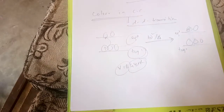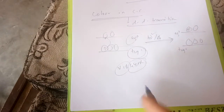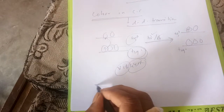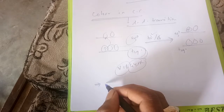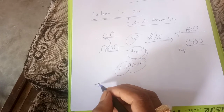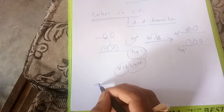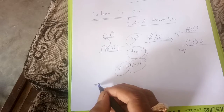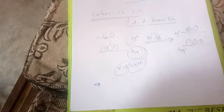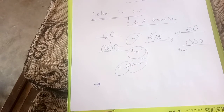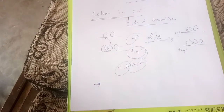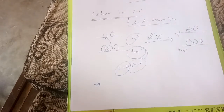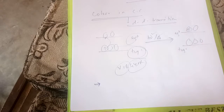Students are required to read this topic. Another application is color of gemstones — in gemstones also, d-d transitions take place, and that is why gemstones have some color.